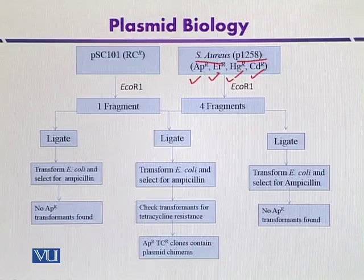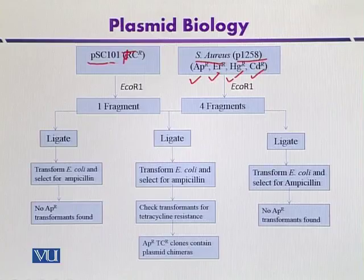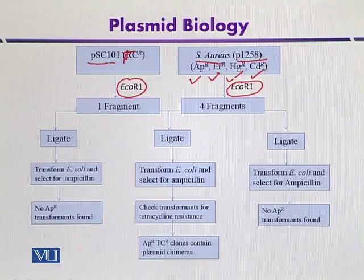Whereas on PSC-101, the resistance is for tetracycline. Both plasmids can be digested with EcoRI. In the case of P-1258, four fragments are produced, and only one linear fragment is produced for PSC-101.